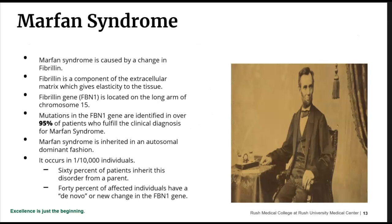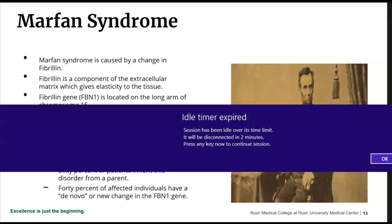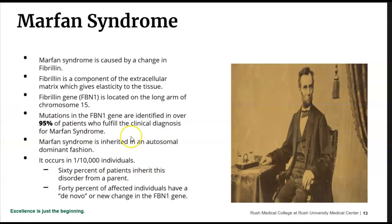Next, we'll talk about Marfan syndrome. This is a different connective tissue disorder caused by a change in fibrillin, which is a component of the extracellular matrix. The gene fibrillin FBN1 is located on chromosome 15, and mutations of the fibrillin gene are identified in 95% of patients that fulfill the clinical diagnosis of Marfan syndrome. It's inherited in autosomal dominant fashion like all the other connective tissue disorders we've been discussing.